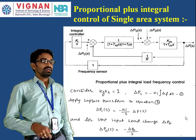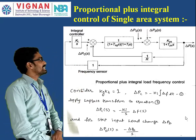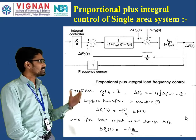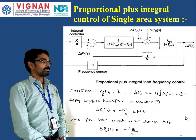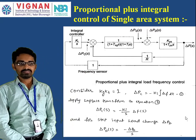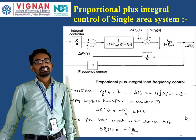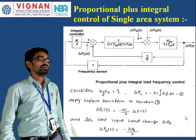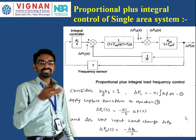Proportional-based integral control of a single area system means we are adding an integral controller to the single area system. The integral controller makes the steady state error equal to zero. The steady state error in frequency — that is delta F static — is equal to zero. That means the steady state frequency error is zero, so there is no change in frequency, and we are maintaining constant frequency and constant speed.